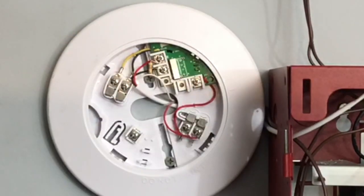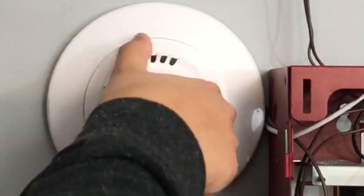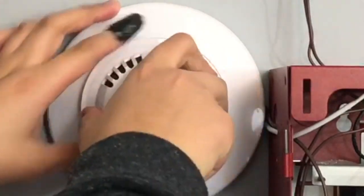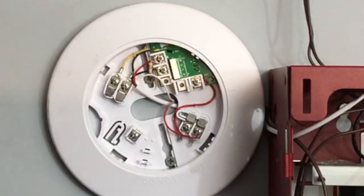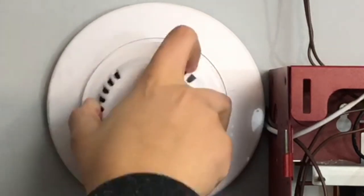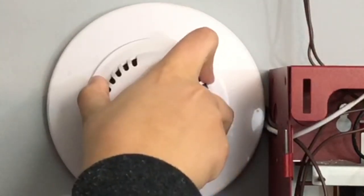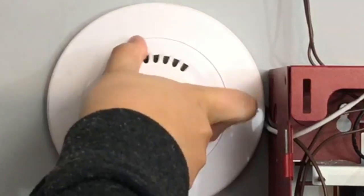So if we put the detector head back on, I think this one lines up just like the Firelight and Notifier detectors with the little notches on the base. There we go.